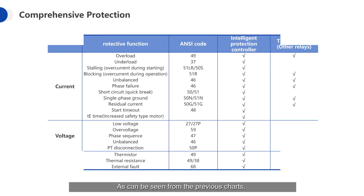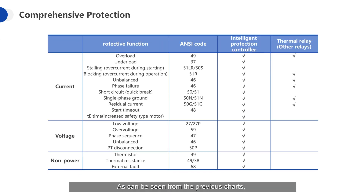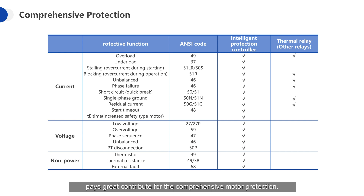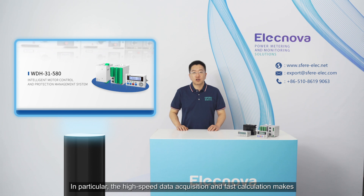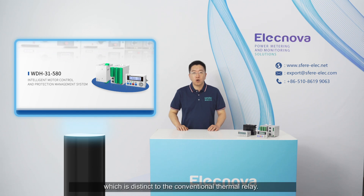As can be seen from the previous charts, the motor controller contains comprehensive protection functions. The extended protection by voltage monitoring and non-electrical protection makes a great contribution to comprehensive motor protection. In particular, high-speed data acquisition and faster calculation enables identification of fault signals and quick response, which is distinct from the conventional thermal relay.